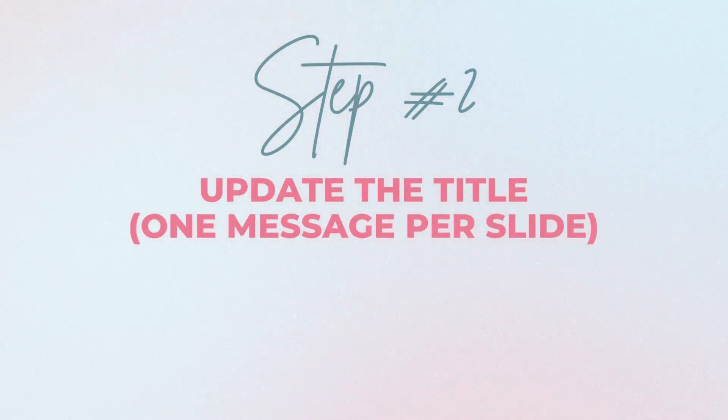Once you have done this entire thinking through and storyboarding, that is when you start putting things actually on a slide. Step number two: the first thing you do is on every slide, update the title. And the title needs to be a message — it doesn't have to be like 'introduction' or 'output' or 'approach.' Whenever you create a PowerPoint deck, your title needs to be a summary of whatever is on the rest of the page. So in every slide, you put one key message — one slide, one slide, one slide — and that is going to be your first skeleton.